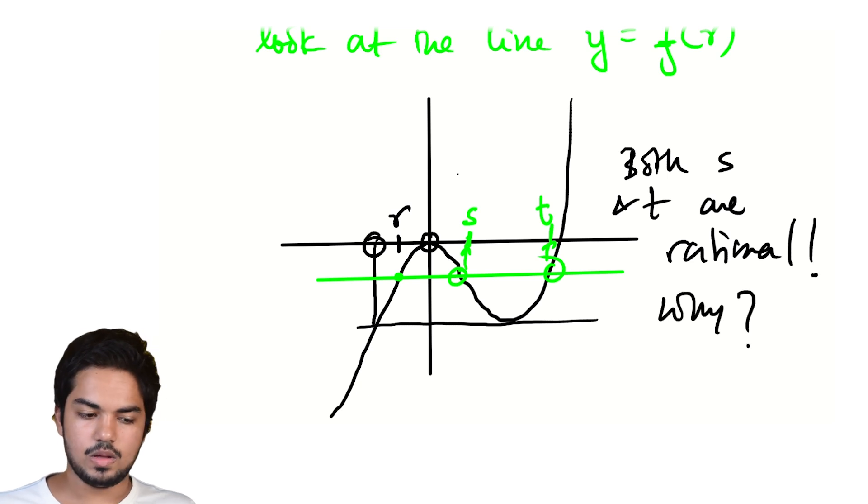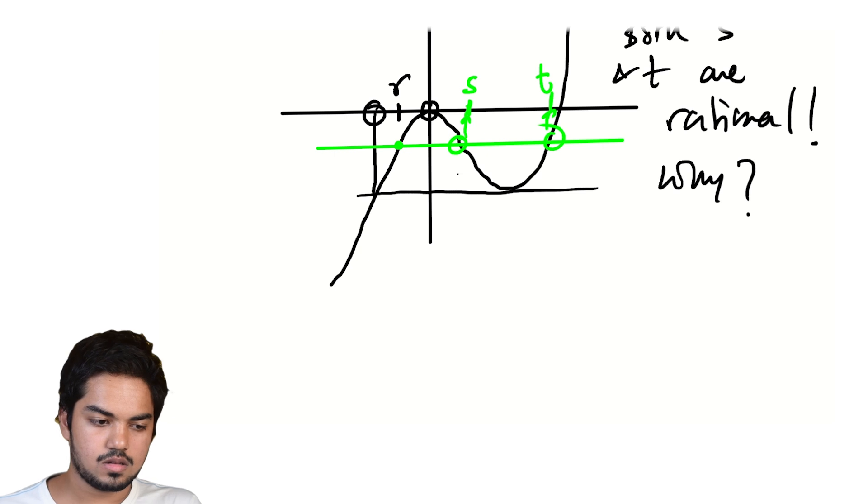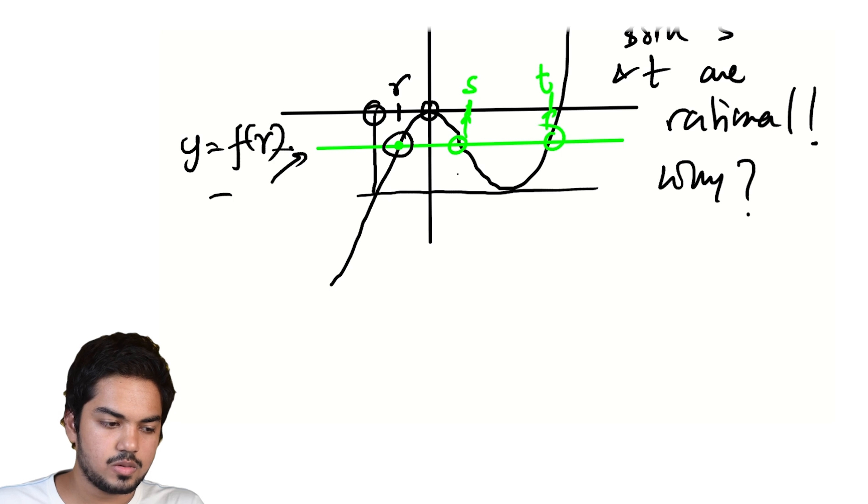Both S and T are rational. Why? Well, we have a rational point on a rational line. That's why. Since the line, this line is Y = f(R) = R³ - R², which is rational.